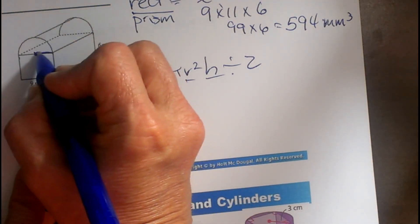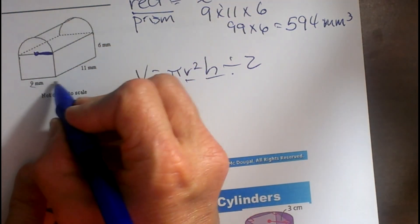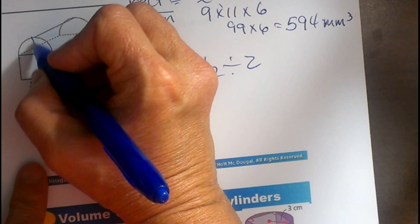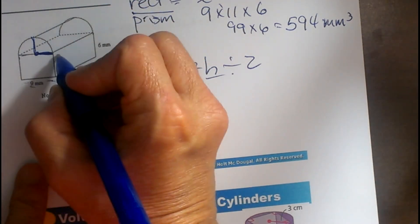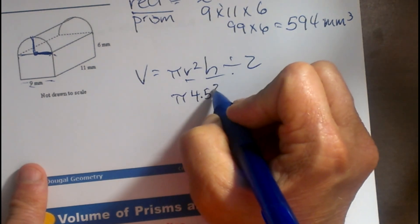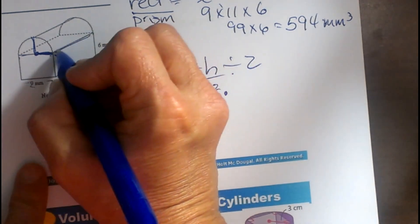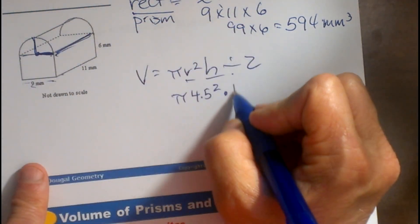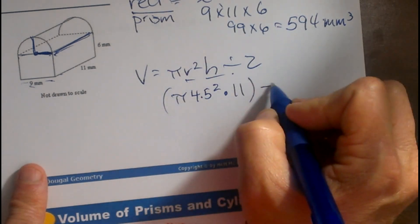So let's go back and figure out our radius and our height. What's the radius of this cylinder? It's half of this side. So this is 9, and this is 9, so it's going to be 4 and a half. So that's going to be 4.5 squared. And now the height is this height, which is 11. Then we're going to take all that and divide it by 2.